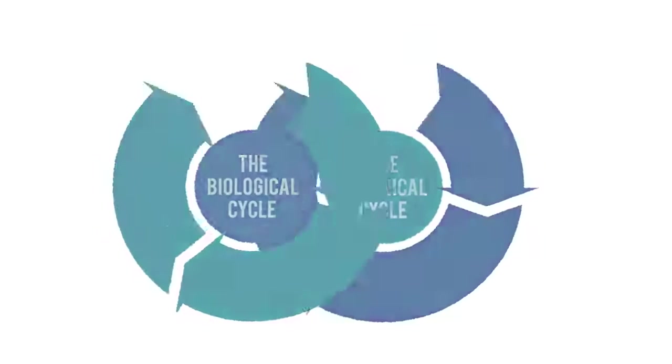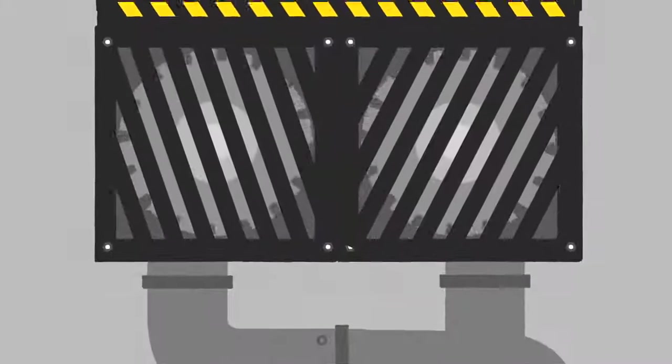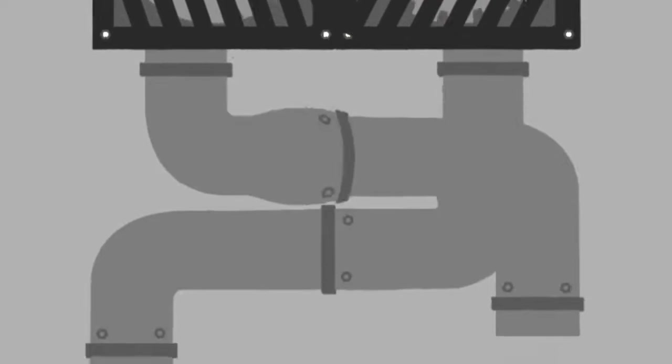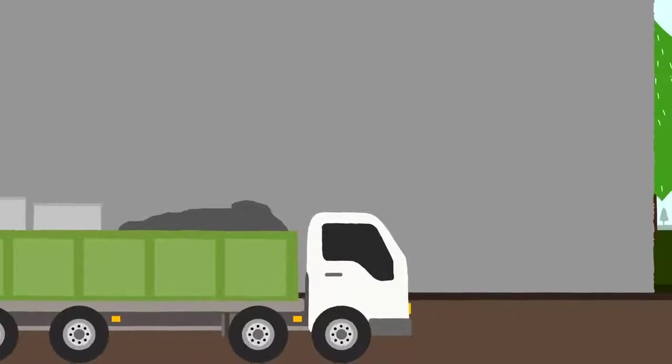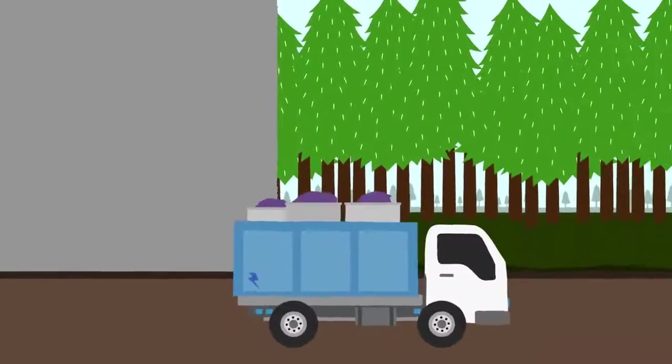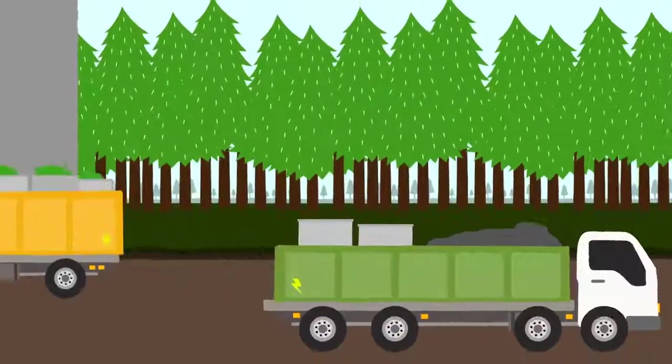let's put these two cycles together. Imagine if we could design products to come back to their makers, their technical materials being reused and their biological parts increasing agricultural value. And imagine that these products are made and transported using renewable energy. Here we have a model that builds prosperity long term.